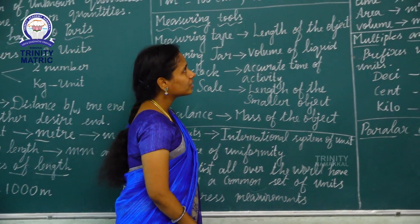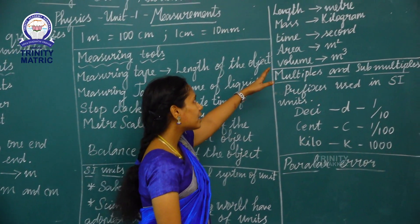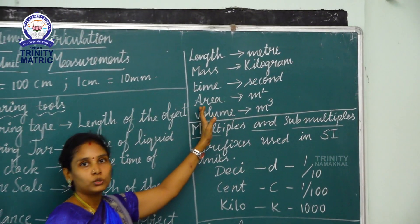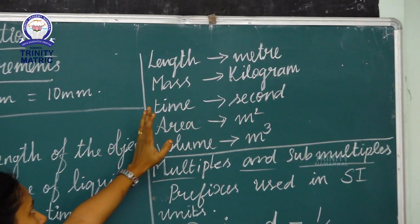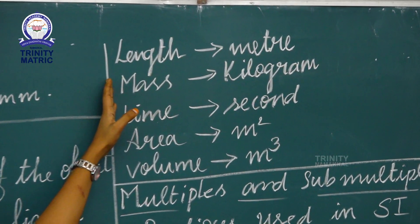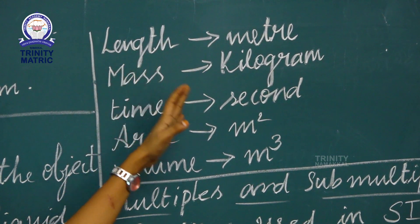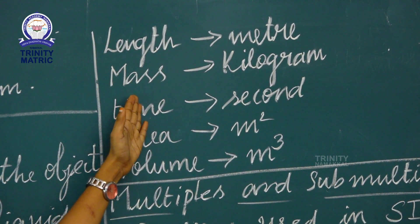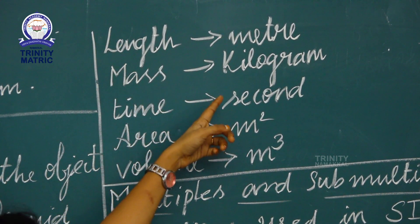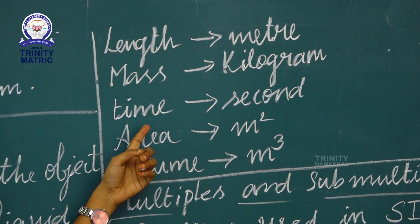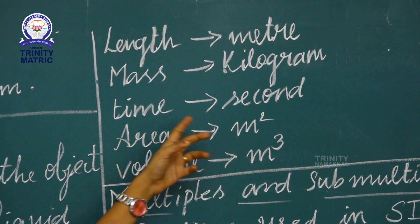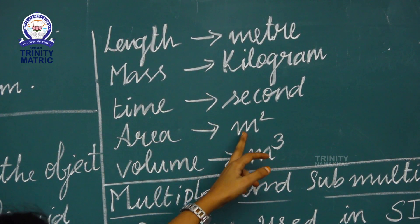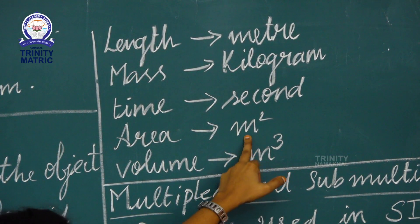These are the general SI units. Length: meter. Mass: kilogram. Time: second. Area: meter square.